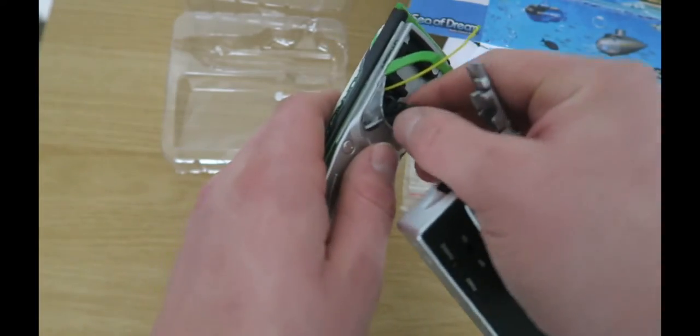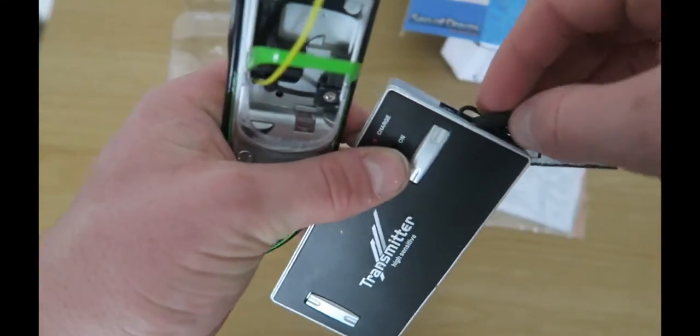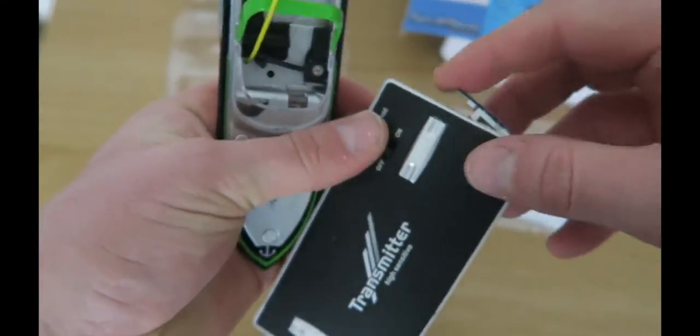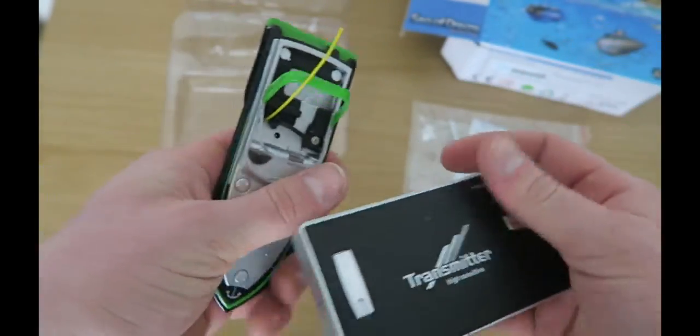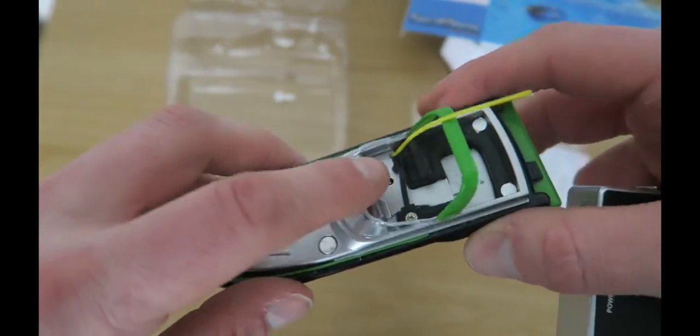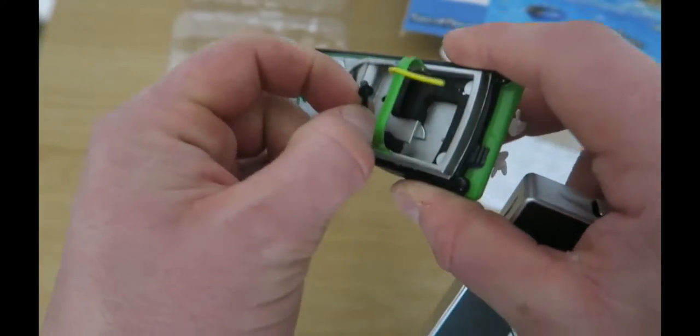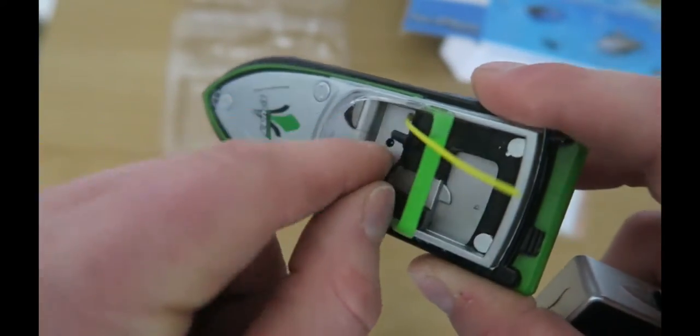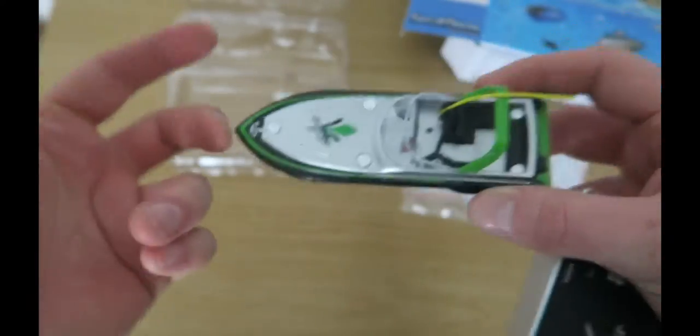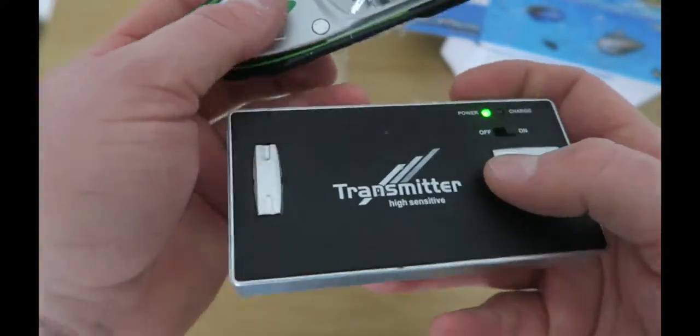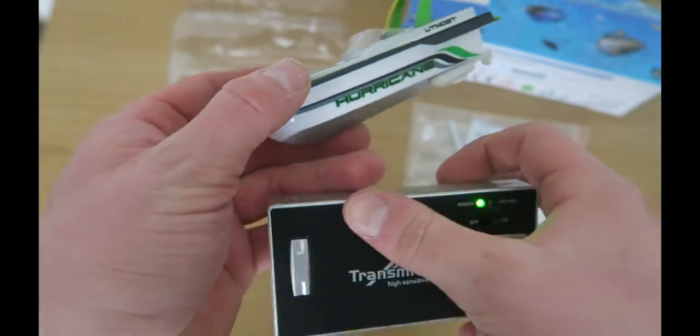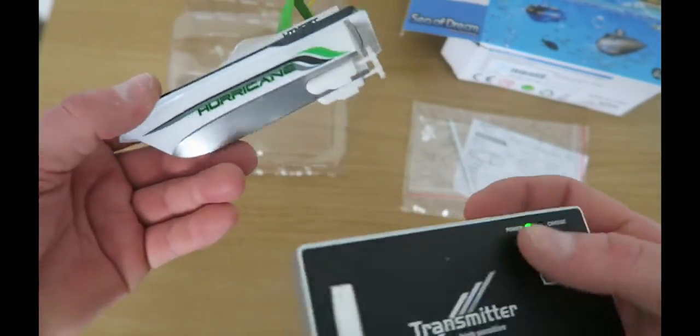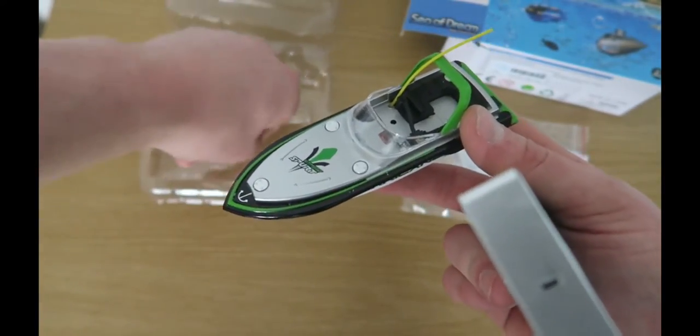Then simply unplug it and pop that away. When you're going to use it in water, there's a little black plug attached to it. That just slots into the hole, and then it's ready to go. Simply power on: forward, back, turn, etc.